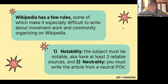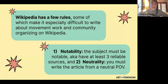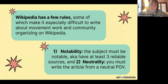Wikipedia has a few rules if you're unfamiliar, some of which make it especially difficult to write about movement work and community organizing on Wikipedia. The first one is notability — the subject must be notable, also known as having at least three reliable sources. And we know that lots of people were written out of records or not written into records at all.